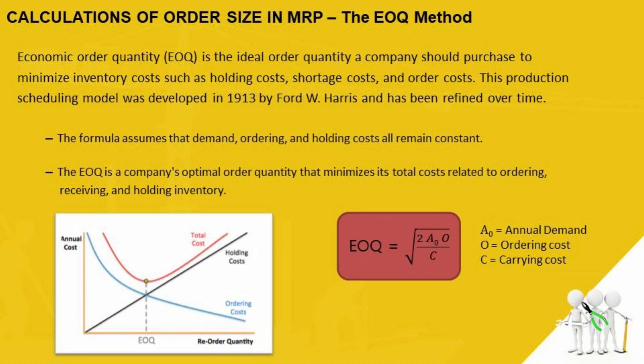EOQ is basically a formula that assumes demand, ordering, and holding costs all remain constant, giving us the ideal order quantity. It is a company's optimal order quantity that minimizes its total cost related to ordering, receiving, and holding inventory. EOQ is given by the square root of 2·A0·O divided by C, where A0 is the annual demand, O is the ordering cost, and C is the carrying cost.